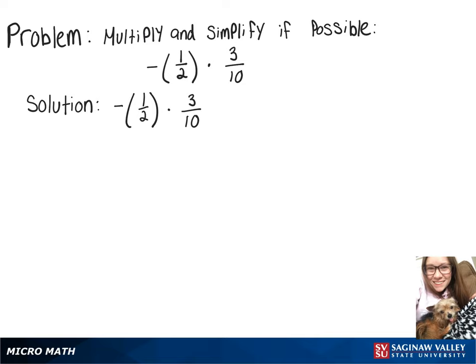We're going to do negative 1 half times 3 over 10. I'm going to rewrite that as negative 1 times 3 on top over 2 times 10. Negative 1 times 3 is negative 3, and 2 times 10 is 20. So we get negative 3 over 20.